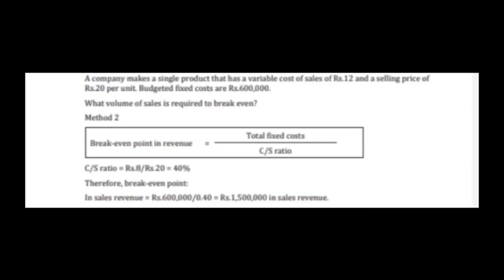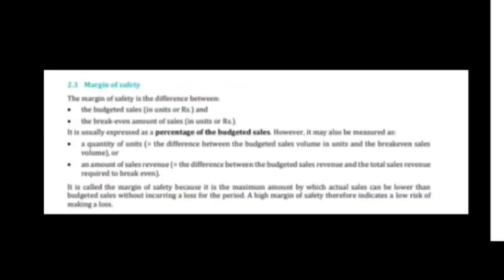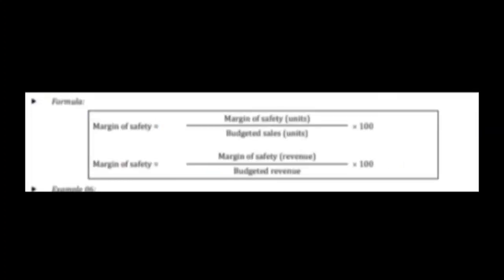Margin of safety means the difference between budgeted sales and the break-even amount of sales. It can be expressed in units or in revenue. The margin of safety is used by the company to estimate how likely it is to suffer a loss — the higher the margin of safety, the lower the chances of making a loss.